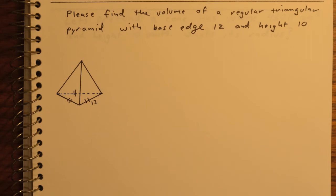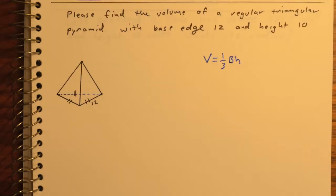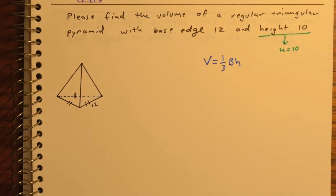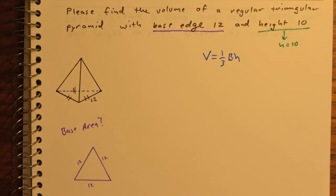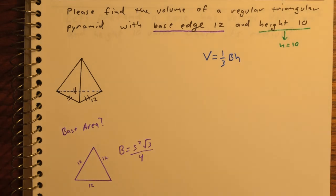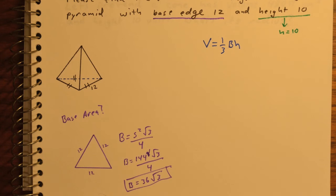Another example here, we want to find the volume of a regular triangular pyramid, base edge of 12 and height of 10. The height isn't shown, but we know h equals 10. We need to find the area of one base, given one base edge is 12. Since we have a regular triangle, that's another way of saying an equilateral triangle, the area of the base, we can use side squared root 3 over 4 to get a base area of 36 root 3.